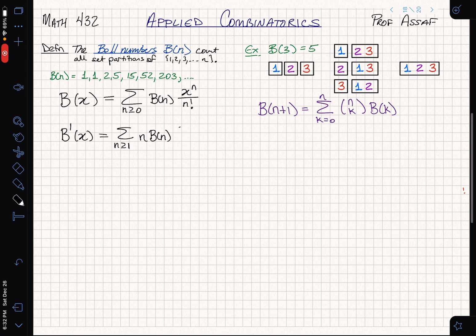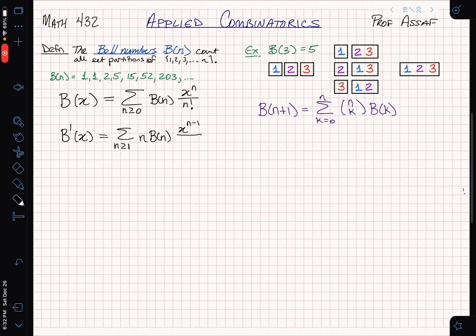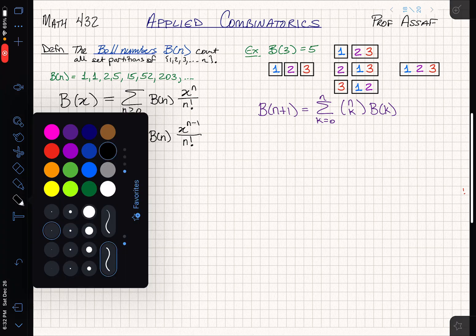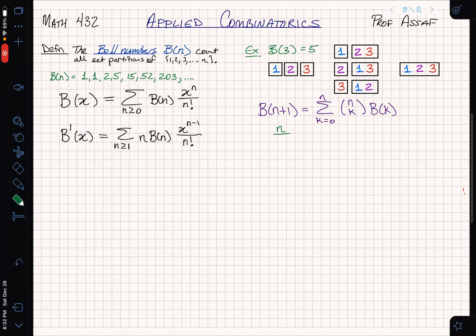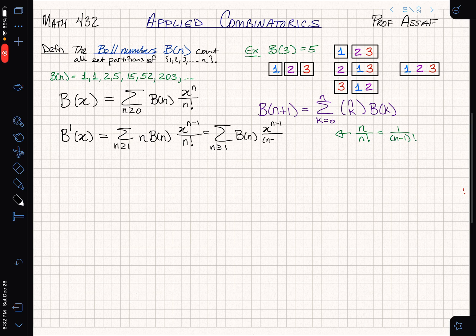How does that go? It's just a generating function, so we can take the derivative term by term. B(n) is a constant, so it stays down. That constant term died, so we better start our indices at 1, not at 0. x to the n has derivative n x to the n minus 1. Thankfully, I have already killed my constant term. I'm going to divide by n factorial because that's just a constant.